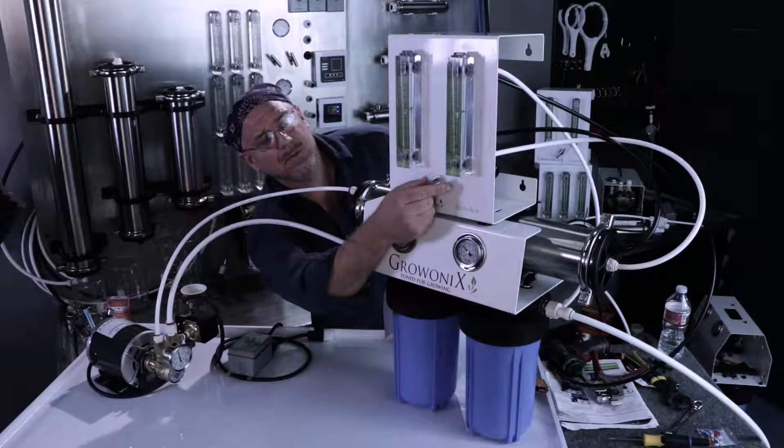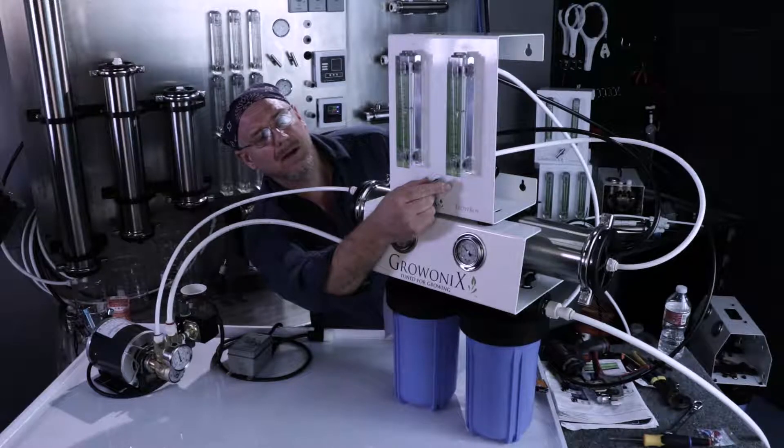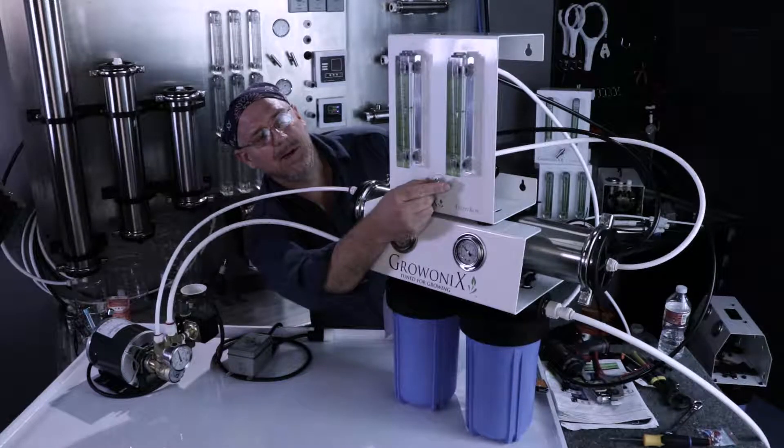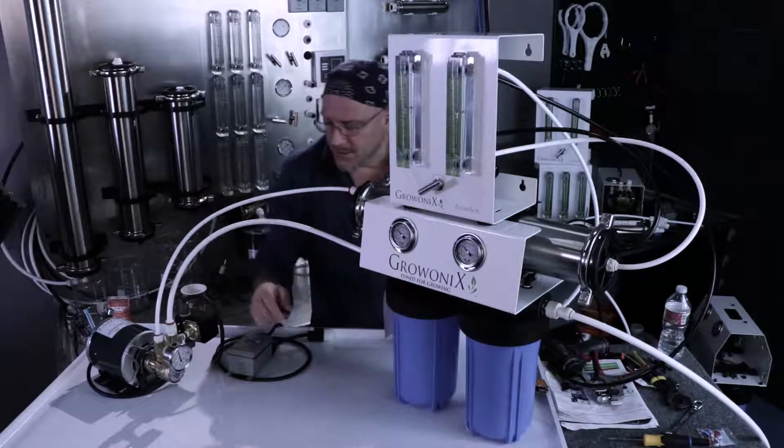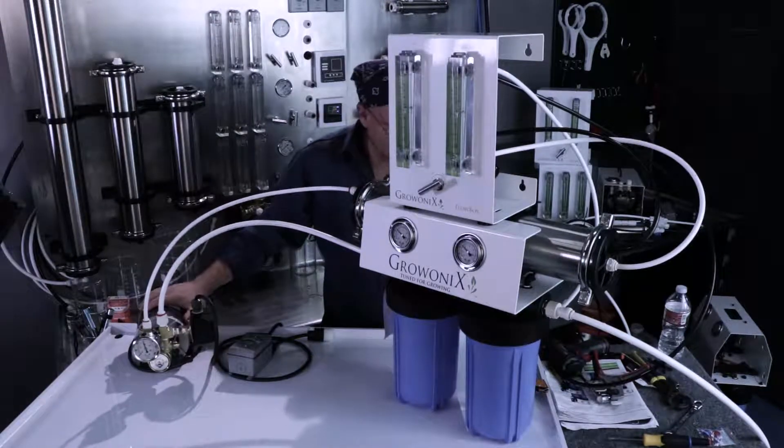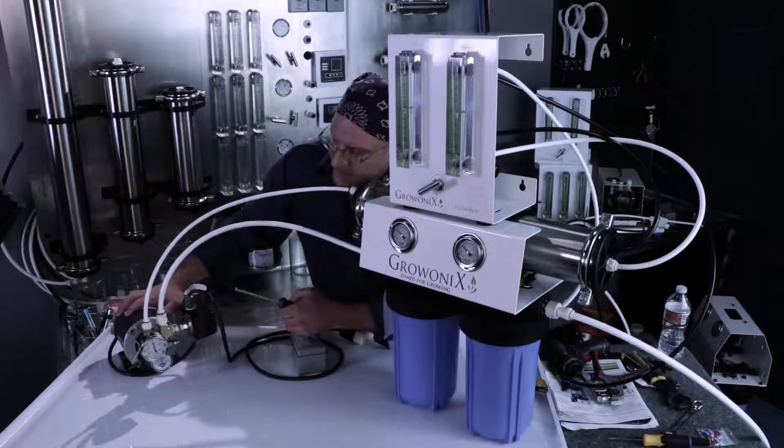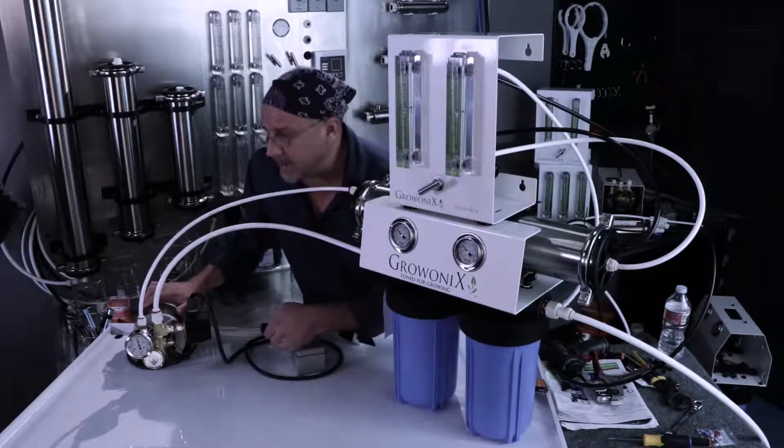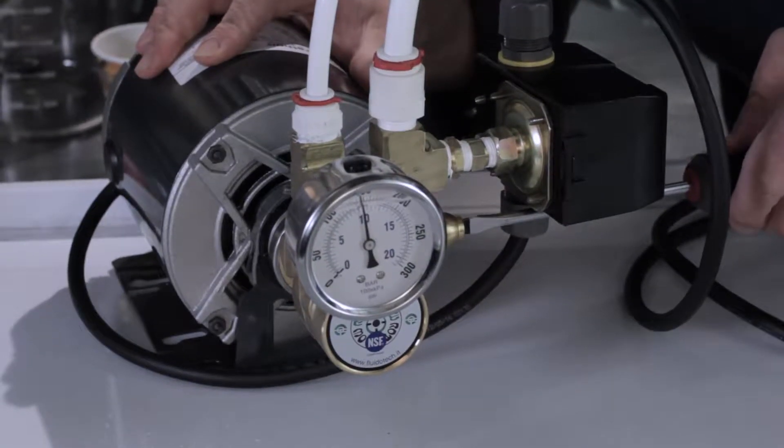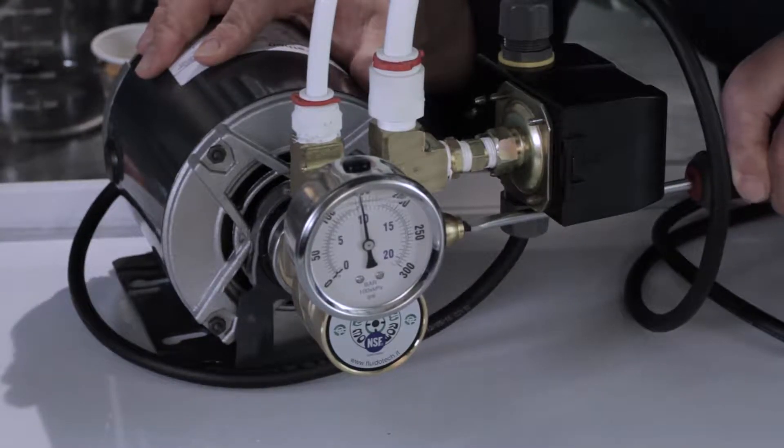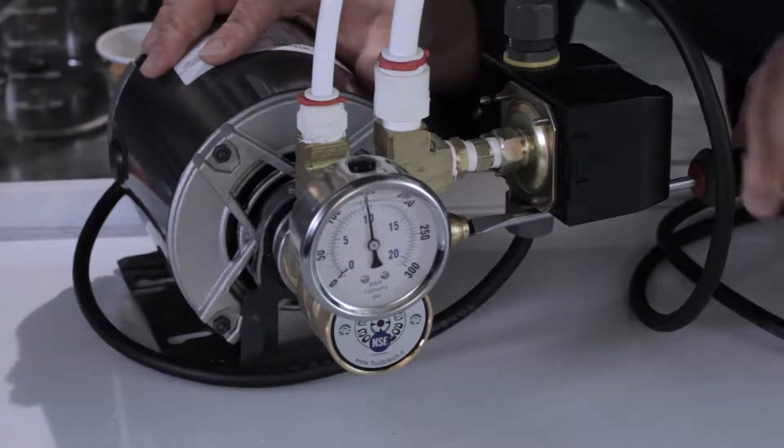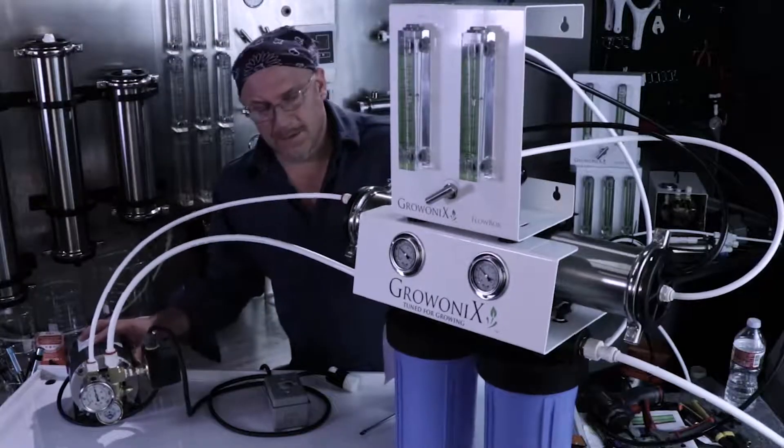Now that we're at a ratio of one to one, I like to run a little more drain water than permeate, so I'm going to open up the drain just a little bit. You'll notice my pump pressure probably changed, so I'm going to take my screwdriver and adjust my pump pressure to 150 psi.